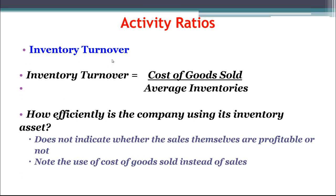Another turnover ratio is the inventory turnover ratio. This is the oddball of the group because it does not use sales in the numerator like every other turnover ratio — instead it uses cost of goods sold. Specifically: cost of goods sold divided by average inventories. The reason is that inventory is measured in the same cost that's in cost of goods sold — the cost per unit. We're comparing apples to apples here, which we can't say about any of the other ratios.